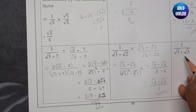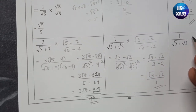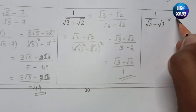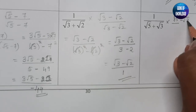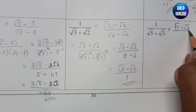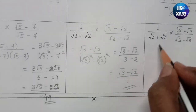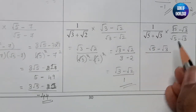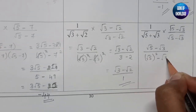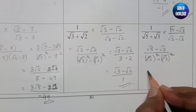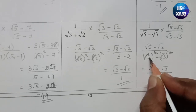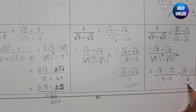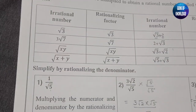Next, 1/(√5 + √3). We multiply by (√5 − √3)/(√5 − √3). The numerator becomes √5 − √3. The denominator is a²−b²: 5 − 3 = 2. So the answer is (√5 − √3)/2.